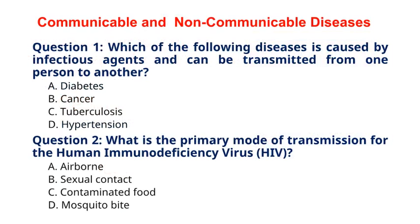Question 1: Which of the following diseases is caused by infectious agents and can be transmitted from one person to another? A. Diabetes, B. Cancer, C. Tuberculosis, D. Hypertension. The correct answer is option C, Tuberculosis. Explanation: Tuberculosis is an example of a communicable disease caused by the bacterium Mycobacterium tuberculosis and can spread through the air when an infected person coughs or sneezes.